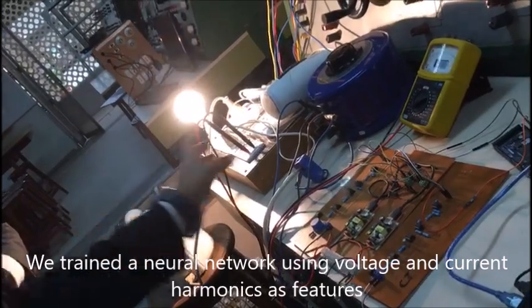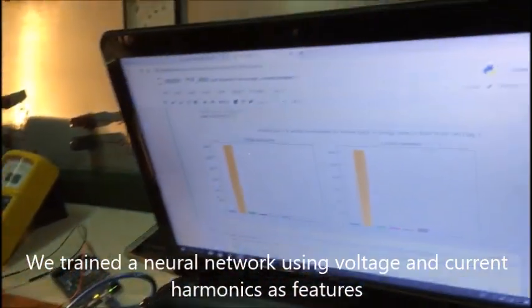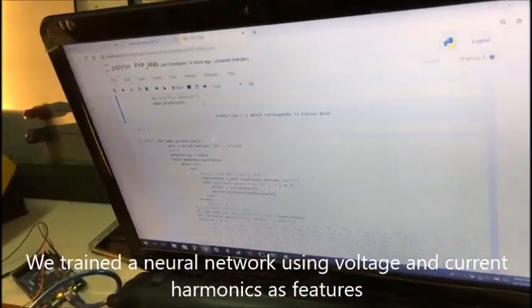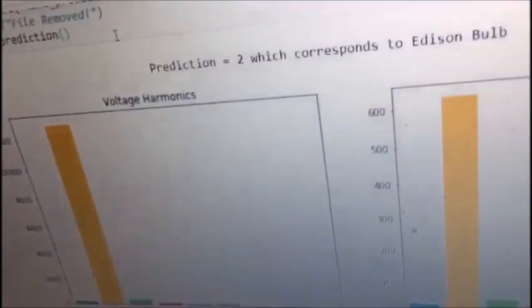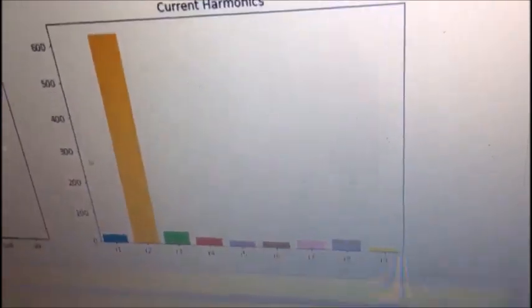This is an Edison bulb and we're going to check what our neural network predicts here. And it says prediction 2 which corresponds to Edison bulb and it shows you the voltage and current harmonics of the current appliance.